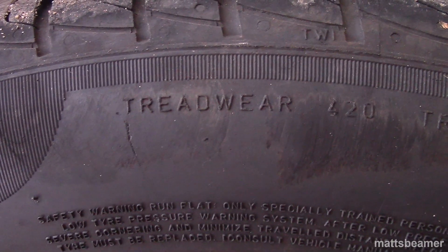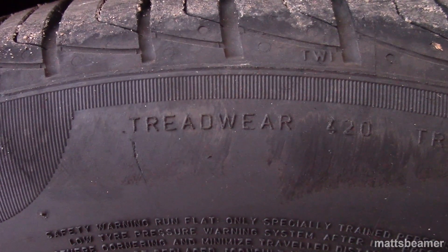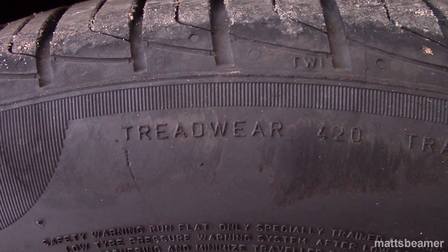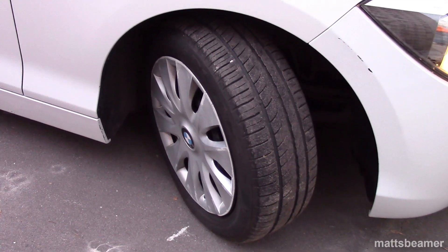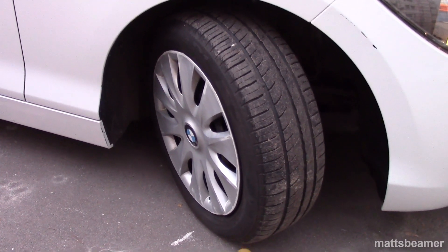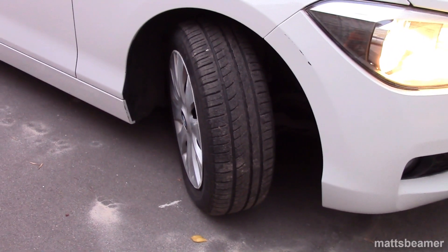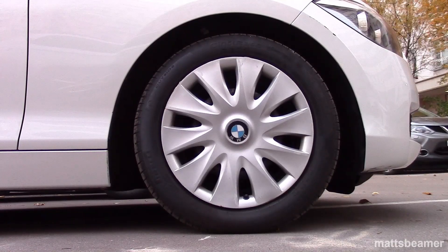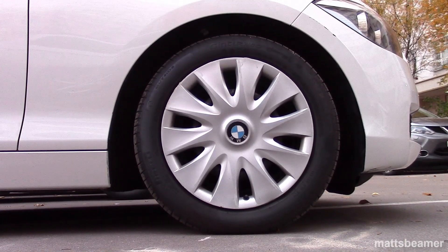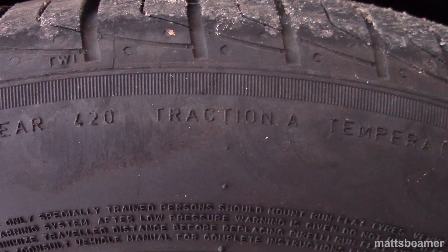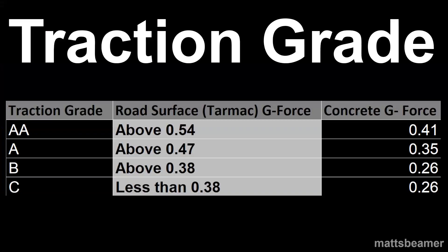Treadwear guide: this is basically a number system used to measure how fast or slow a tire will wear down. A tire with a rating of 200 will wear down twice as quick as one with 400. Mine are rated at 420. Just remember that this rating could differ from manufacturer to manufacturer. Traction: these measurements show how good the traction is on the car's tire. AA is the best measurement and C is the worst. Here is the table of the initials next to the tarmac and concrete g-force ratings.